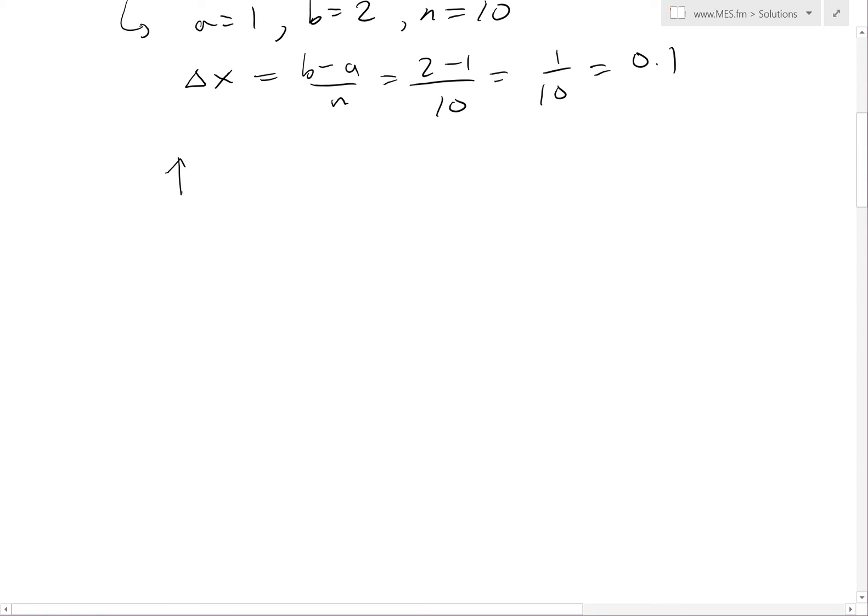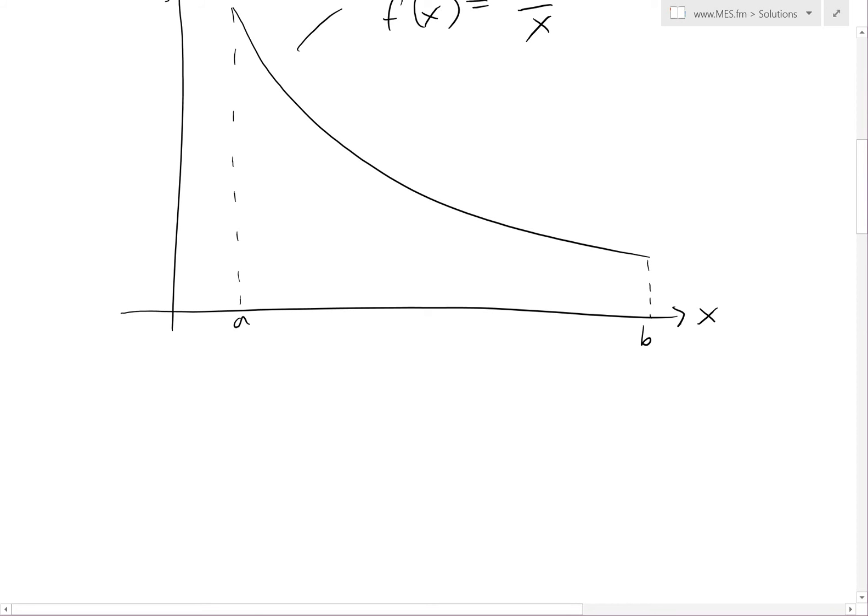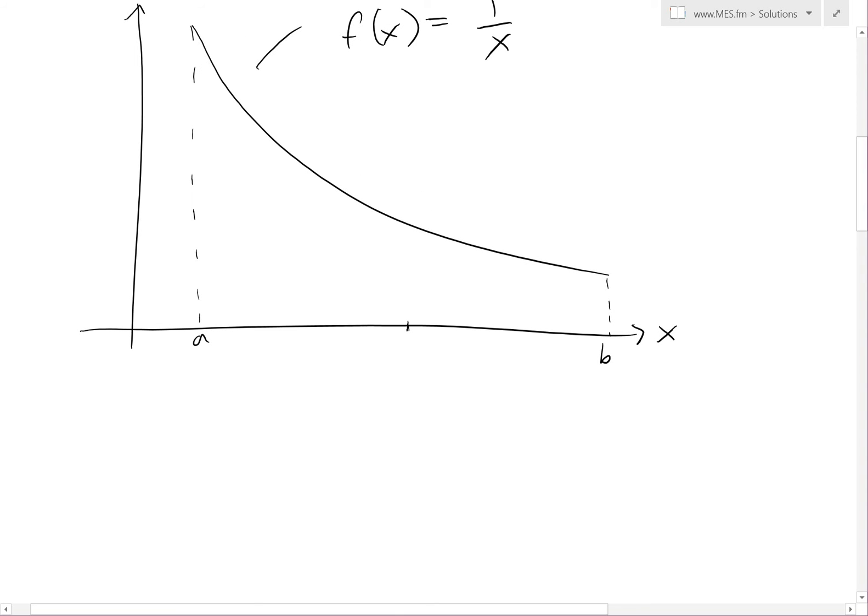If we graph this out to get a better illustration, this is x, this is y. The function is 1 over x, or f of x, so f of x equals 1 over x. This is from a, this is b, and now you split this up into 10 subintervals. So 1, 2, 3, 4, 5, drawing these subintervals to get a better illustration of how it looks.